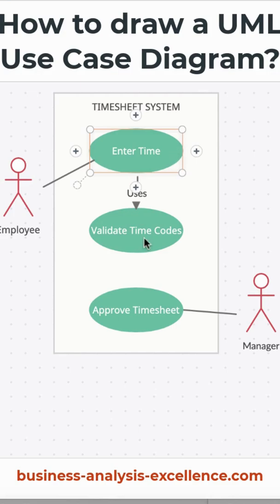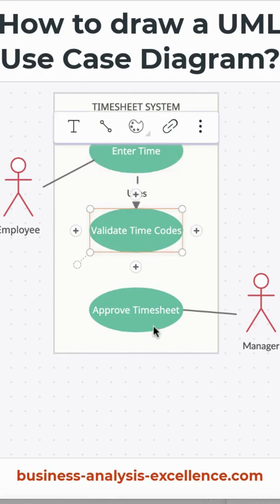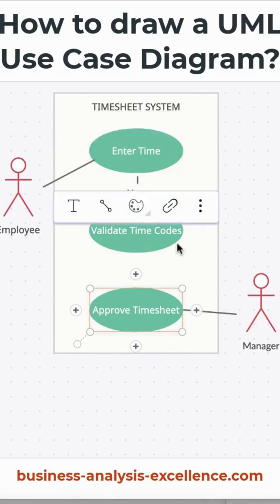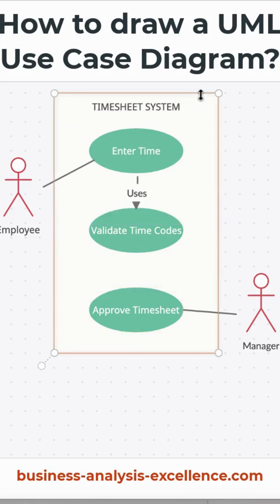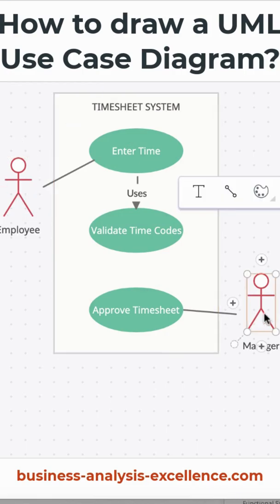In this case we've got three use cases. With your diagram you will have a system boundary, which is the box around your system, a system title — which is the timesheet system — and the different actors will sit outside the boundary, showing these are the users of the system.